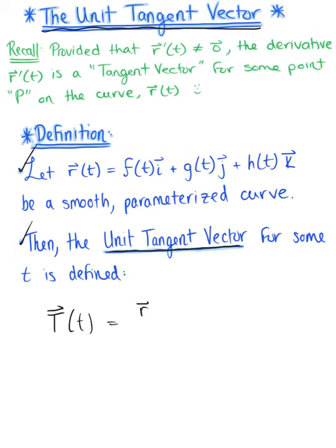This is the tangent vector, the derivative of our vector-valued function, divided by the length of our tangent vector. So again, this is a unit vector pointing in the direction of the tangent vector.